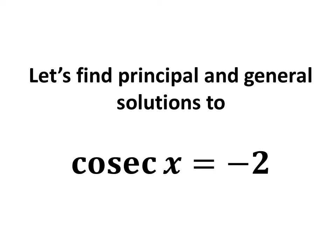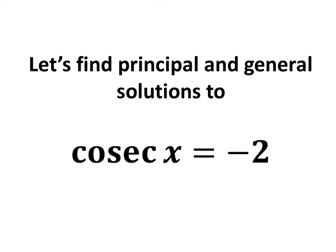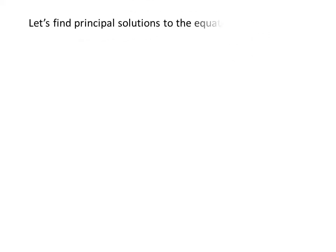In this video, we will learn to find the principal and general solutions to the equation cosecant of x is equal to minus 2. Let us first find the principal solutions. We know the solutions to the trigonometric equation for which x is greater than or equal to 0 and less than 2 times pi are the principal solutions.